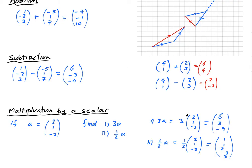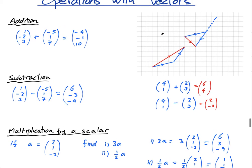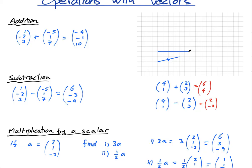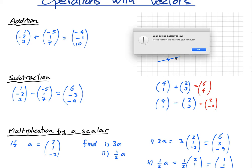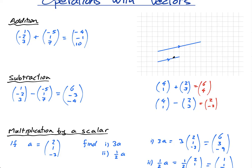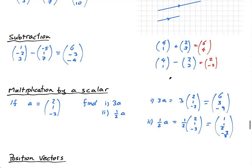There's an important property with multiples of vectors. Let's say I have the vector 4, 1. If I multiply this vector by 2, I get 8, 2. Now, what can you tell me about this vector compared to this vector? Well, clearly it's twice as long and it's parallel. So if a vector is a multiple of another vector, then they are parallel. So 8, 2 is parallel to 4, 1. And 40, 10 is parallel to 4, 1. You can say exactly how much bigger it is by the scalar multiple.